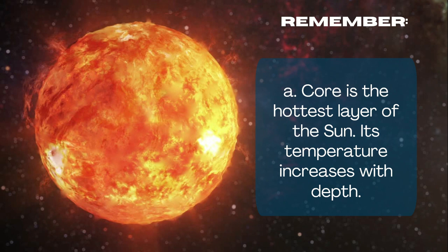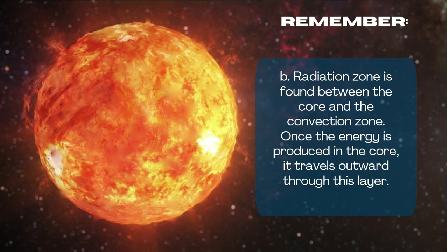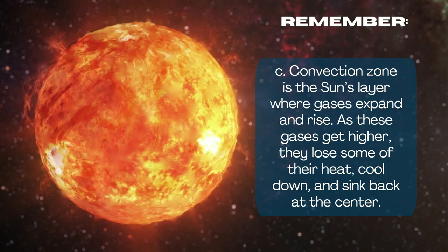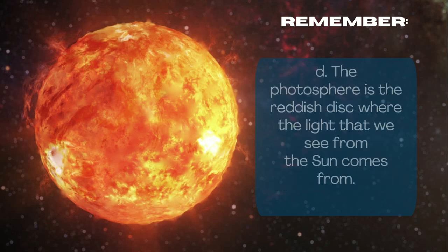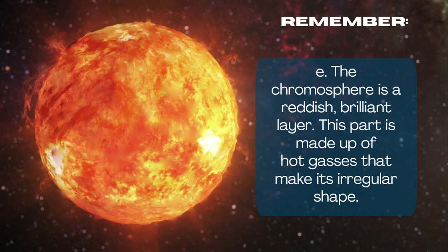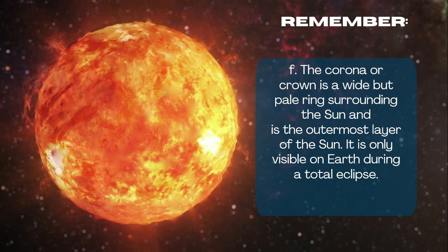Remember: the core is the hottest layer of the sun — its temperature increases with depth. The radiation zone is found between the core and the convection zone; once energy is produced in the core, it travels outward through this layer. The convection zone is where gases expand and rise; as these gases get higher, they lose some of their heat, cool down, and sink back at the center. The photosphere is the disk where the light we see from the sun comes from. The chromosphere is a reddish, brilliant layer made up of hot gases that give it its irregular shape. The corona, or crown, is a wide but pale ring surrounding the sun and is only visible on Earth during a total eclipse.